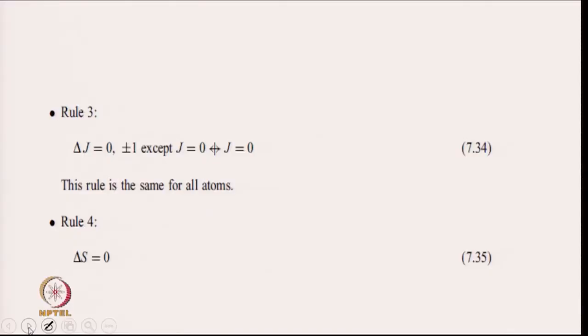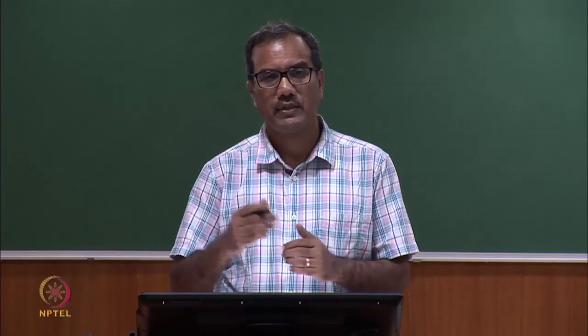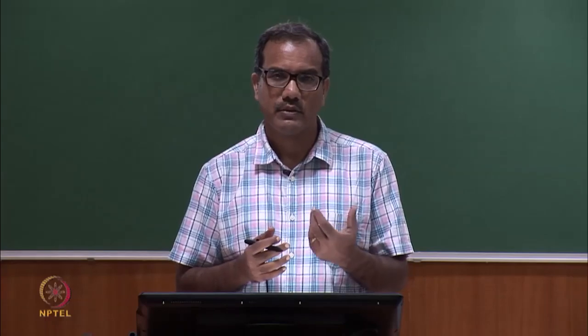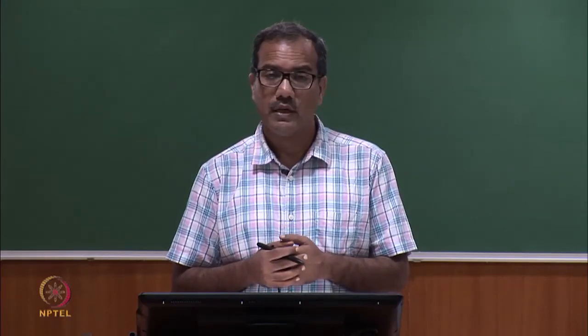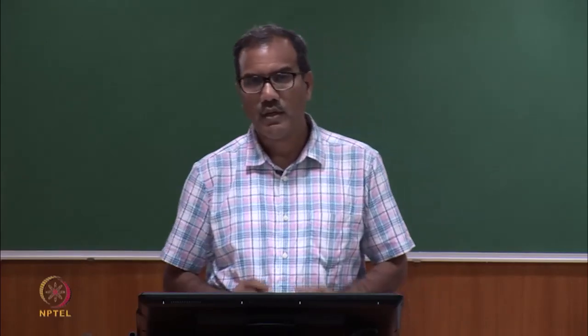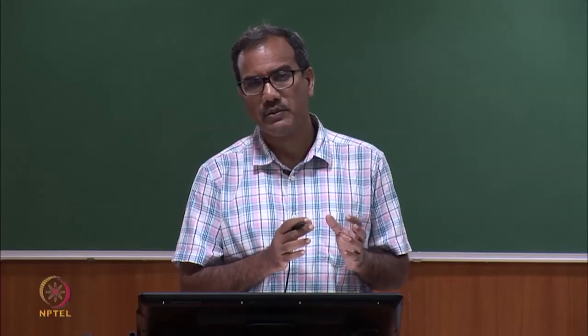Rule 3 is ΔJ = 0, ±1, except that J = 0 to J = 0 is not allowed, which I have discussed several times. Rule 4 is ΔS = 0. So we have now looked at transitions between electronic states of different metal ions in three different cases: hydrogen-like atoms, alkali and alkaline metals, and now metals with more than one electron in the outermost orbital. We are done with the spectra of atoms and will now move to electronic spectroscopy of diatomic molecules.